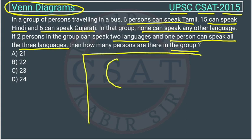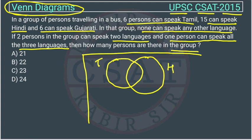There will be 3 circles. This first circle will represent the Tamil language, this circle will represent the Hindi language, and this one will represent the Gujarati language.